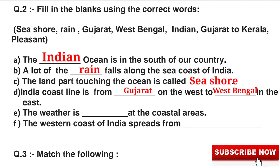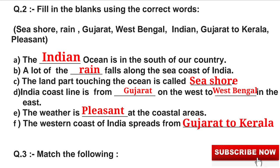E: The weather is blank at the coastal areas. The answer is Pleasant. The weather is Pleasant at the coastal areas. F: The western coast of India spreads from blank. The answer is Gujarat to Kerala. The western coast of India spreads from Gujarat to Kerala.